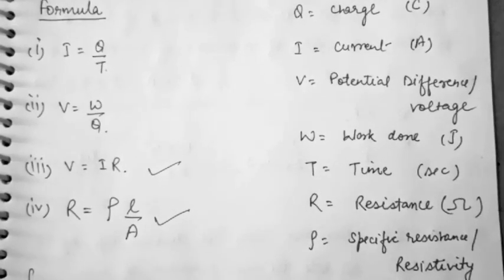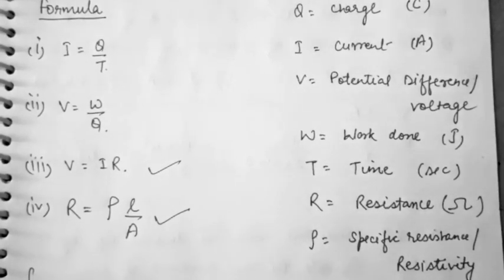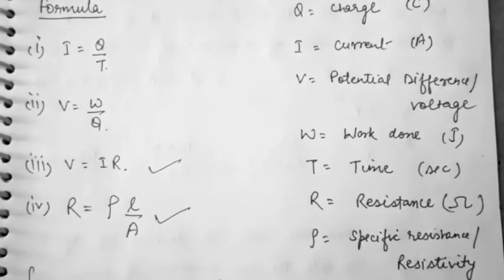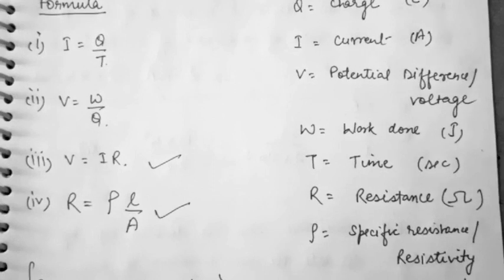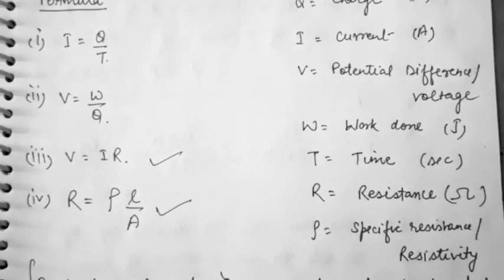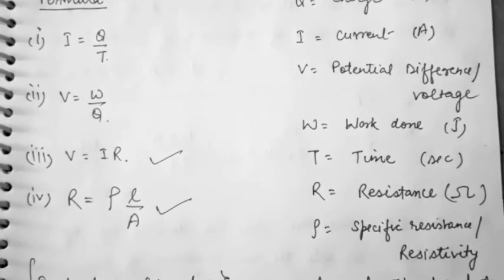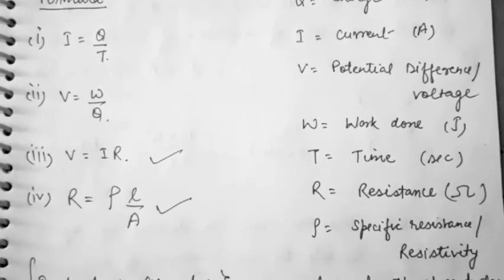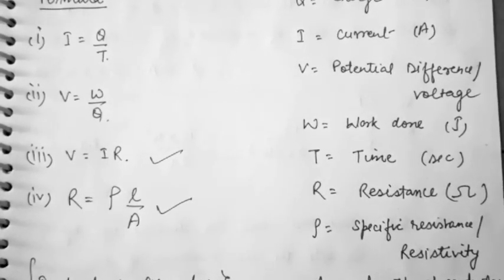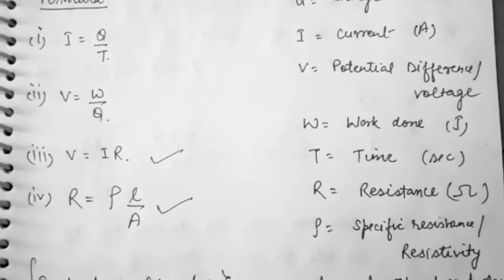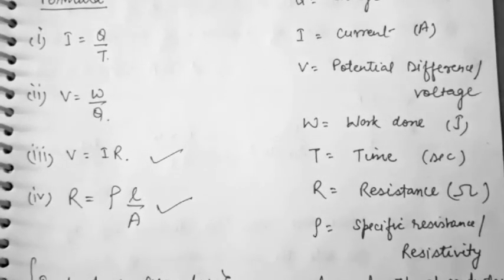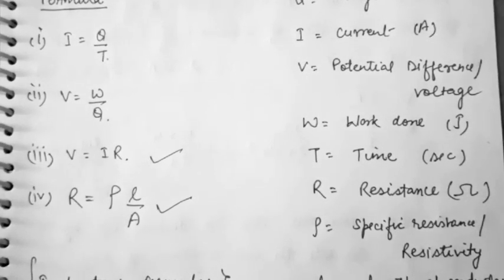Hello students. In the first two lectures we studied about charges, current, potential difference, Ohm's law and dependence of resistance on length and cross section area. If we summarize, we get four formulas in which the third and fourth formula are very important.